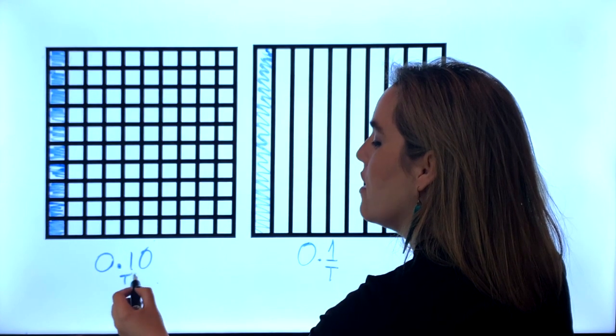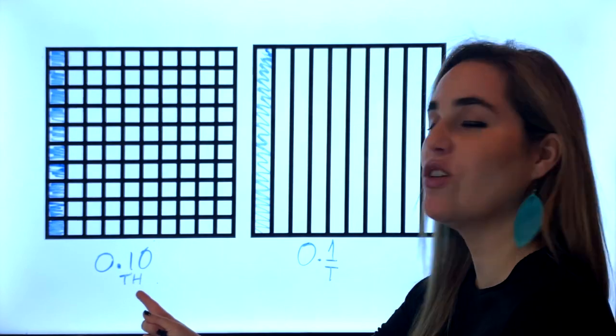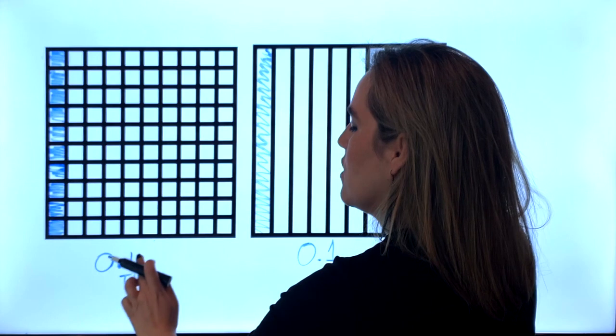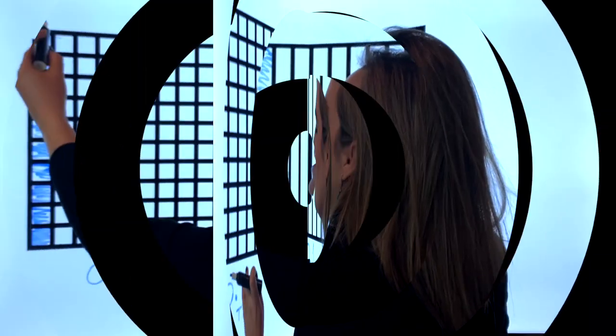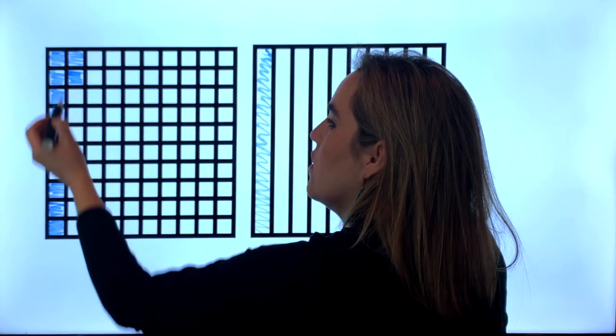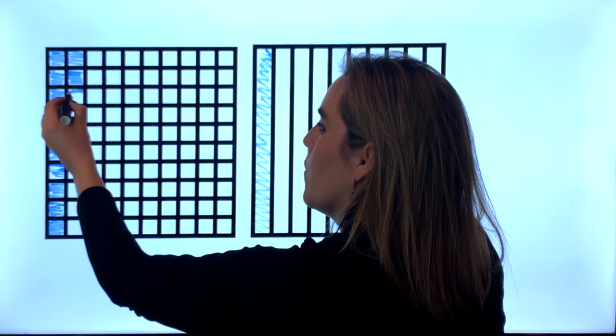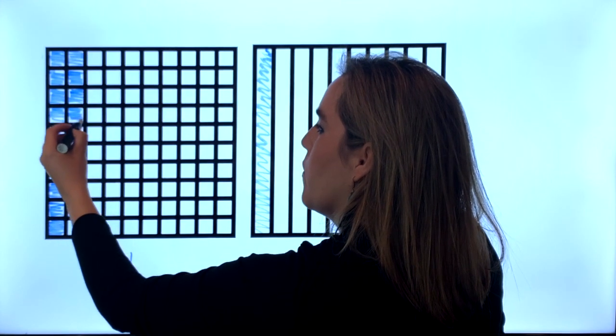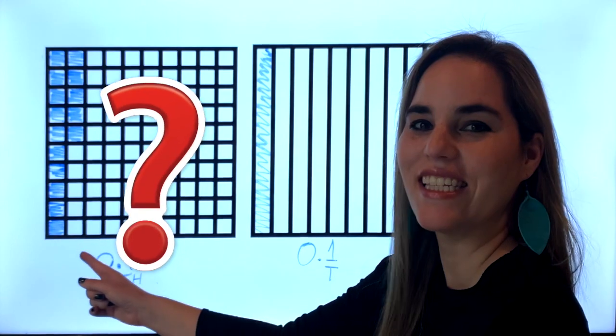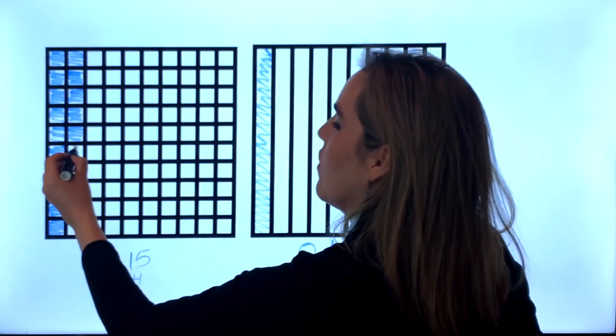Now let's add some hundredths. This will be eleven hundredths, twelve hundredths. How much is this? How much is this? Fifteen hundredths. Let's keep going.